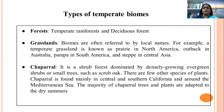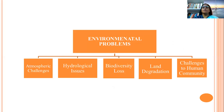The forests include temperate rainforest and deciduous forest. Grasslands are known by different names in different parts of the world. Chaparral is a special kind of forest — actually a shrub forest dominated by densely growing evergreen shrubs and small trees. The problems to be discussed will include atmospheric, hydrological, biodiversity, land degradation, and human community challenges.